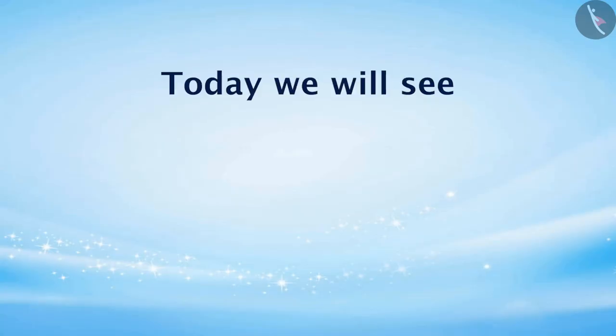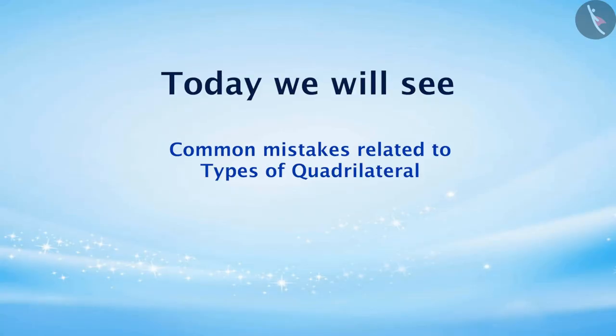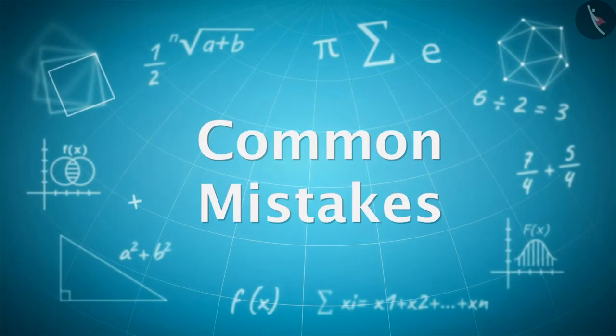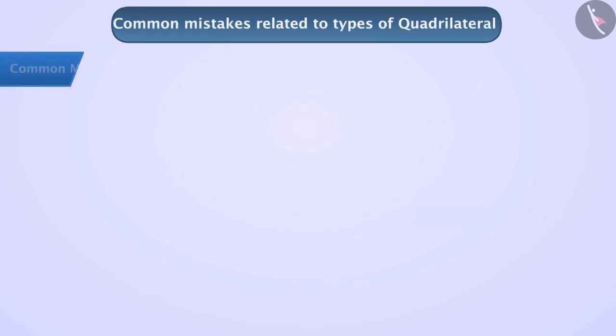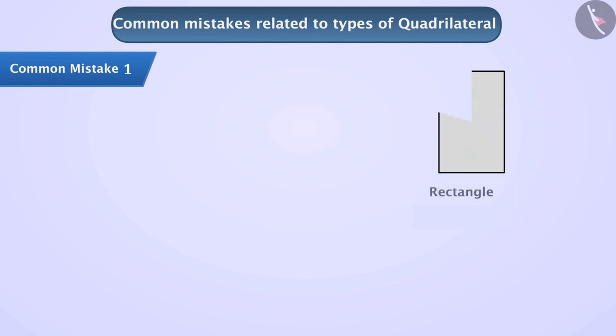Today we are going to see some common mistakes related to types of quadrilateral. Common Mistake 1: students often find it difficult to recognize a rectangle, like the quadrilateral given here.